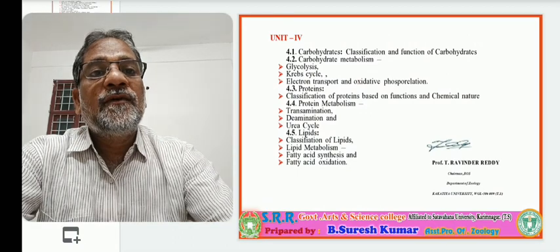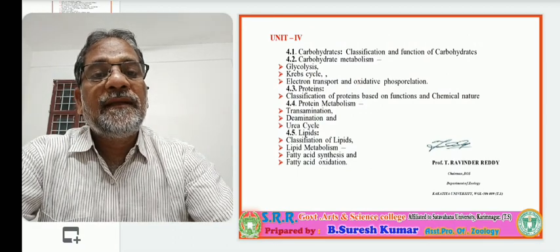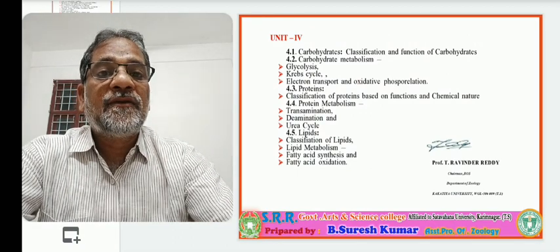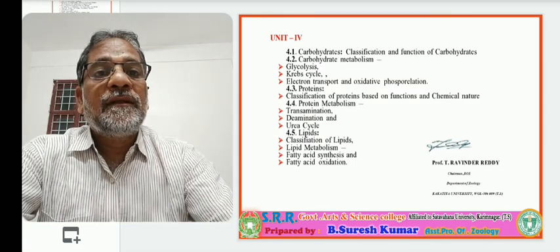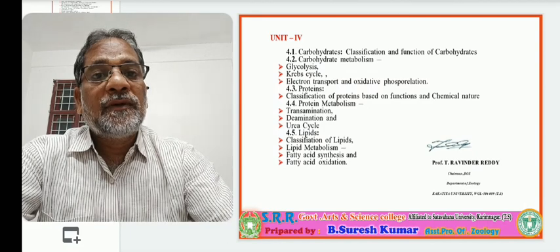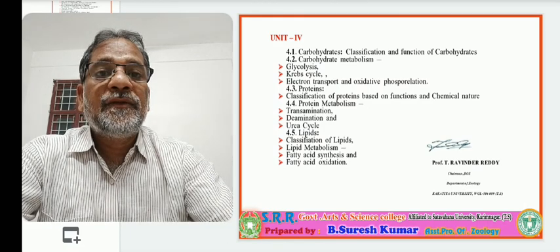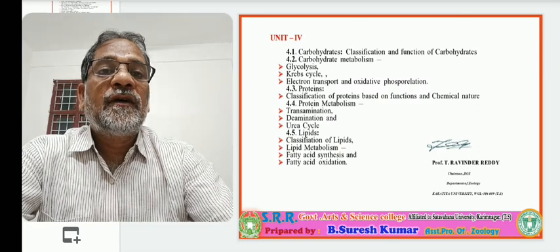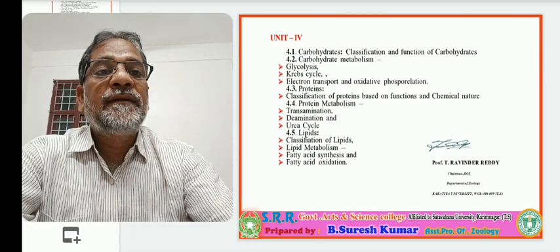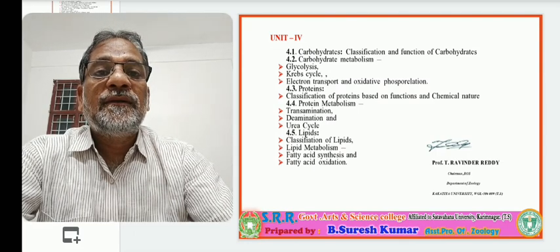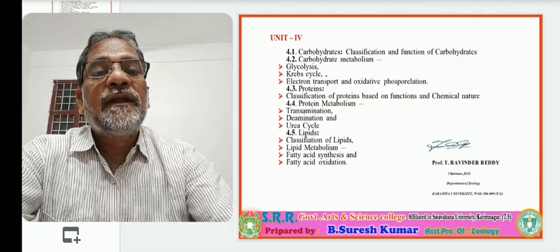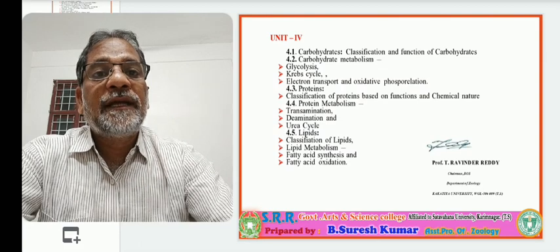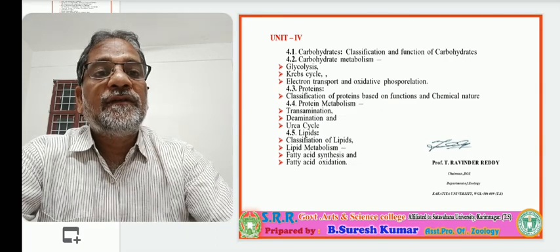Unit 4 purely includes biochemistry topics. The first lesson covers biomolecules — carbohydrates, proteins, lipids, nucleic acids — and metabolism of carbohydrates, proteins, and lipids. All these topics are to be covered in Unit 4. This is the overall syllabus of the Sempi paper of Zoology designed by Satavahana University.